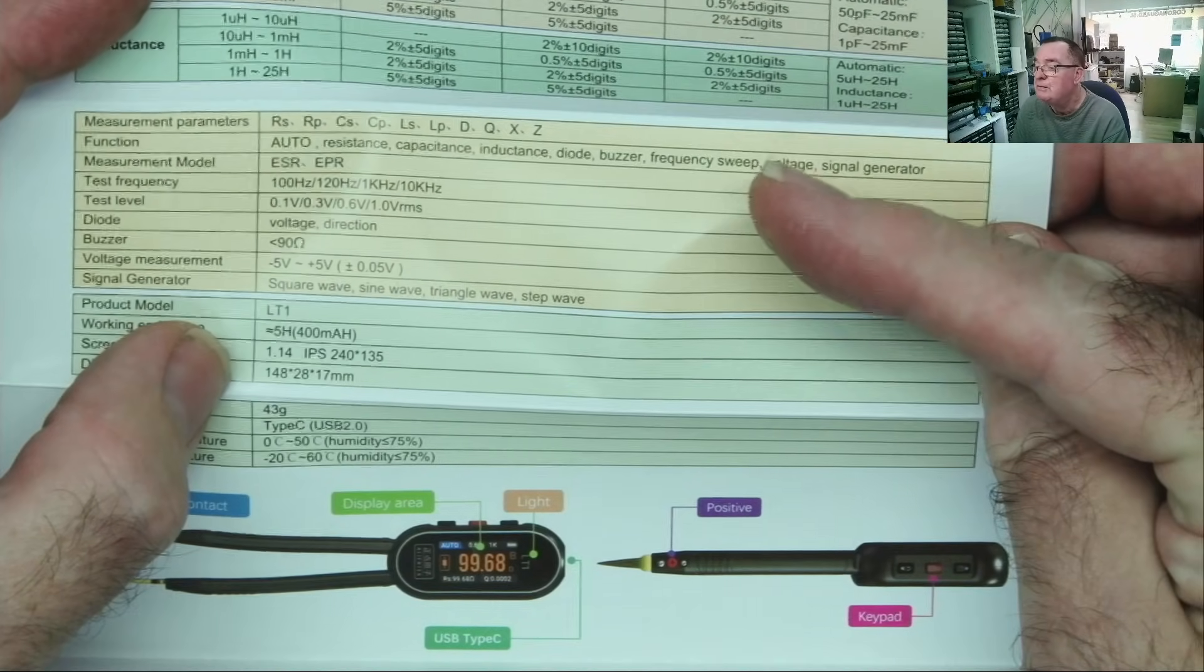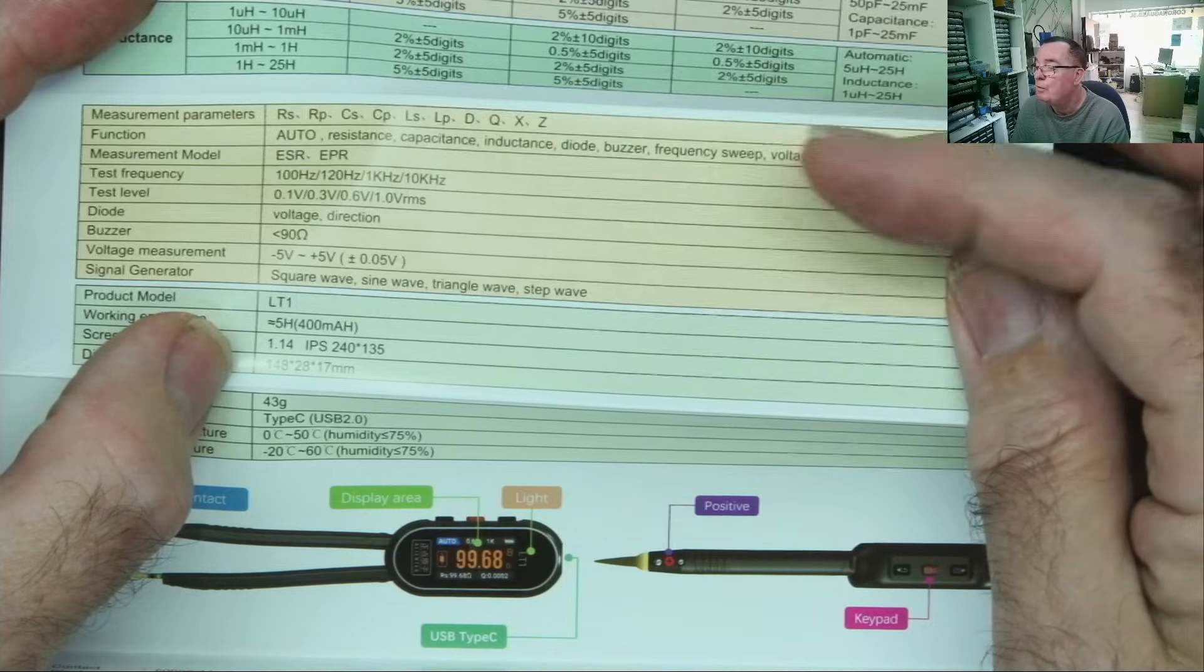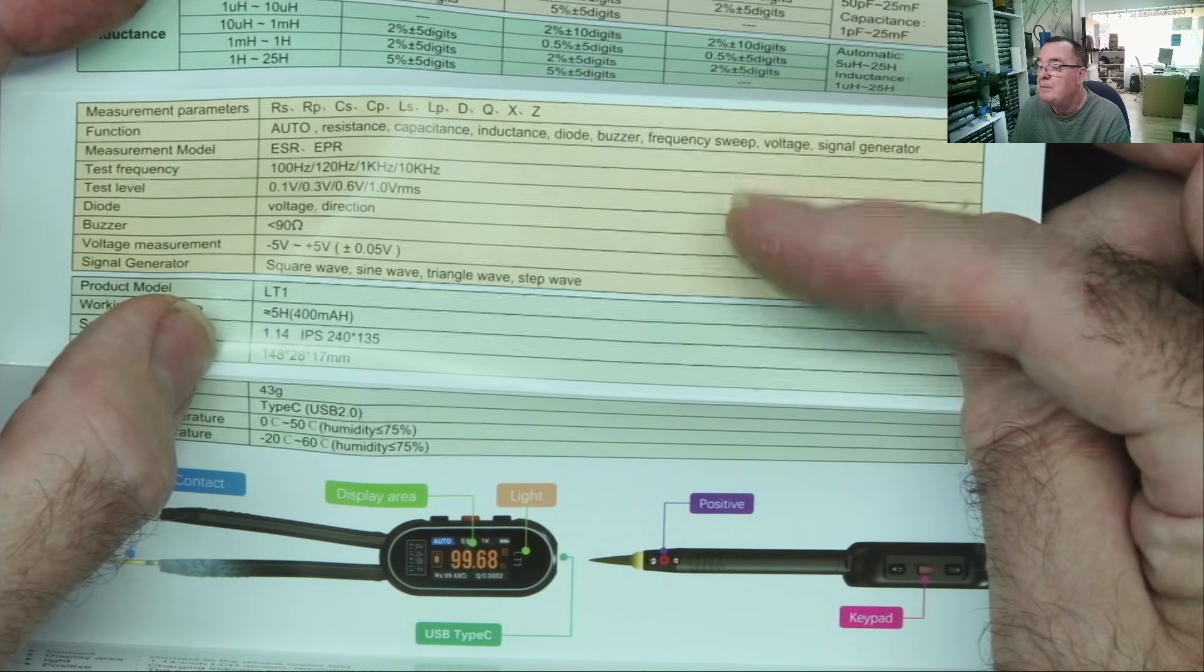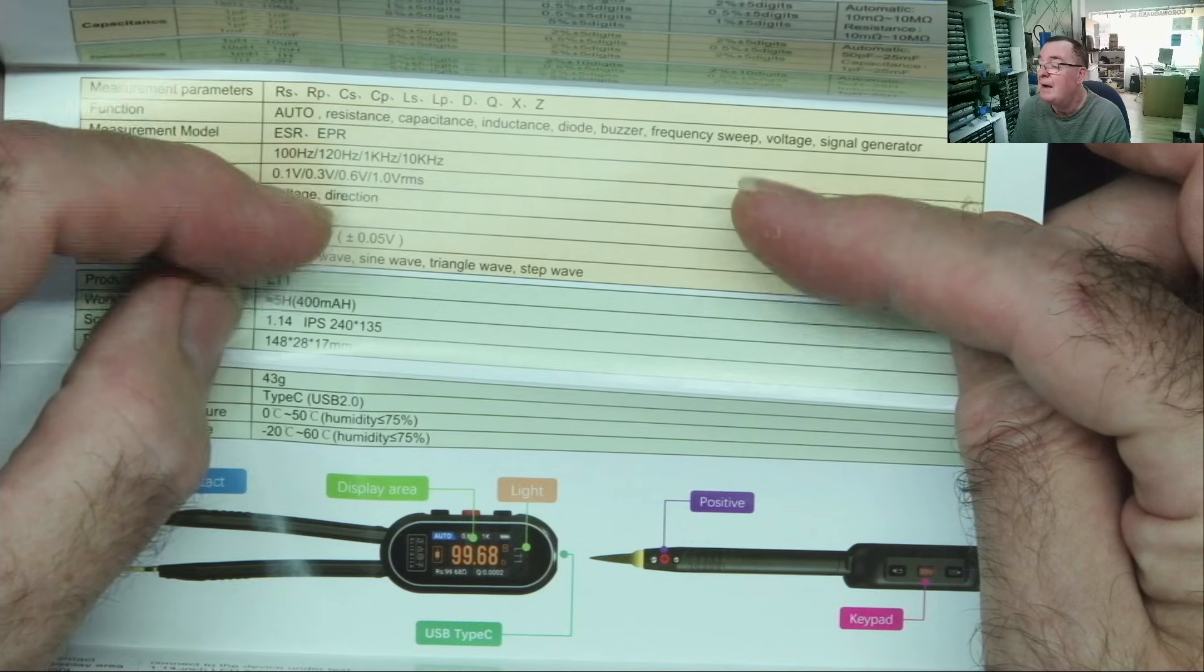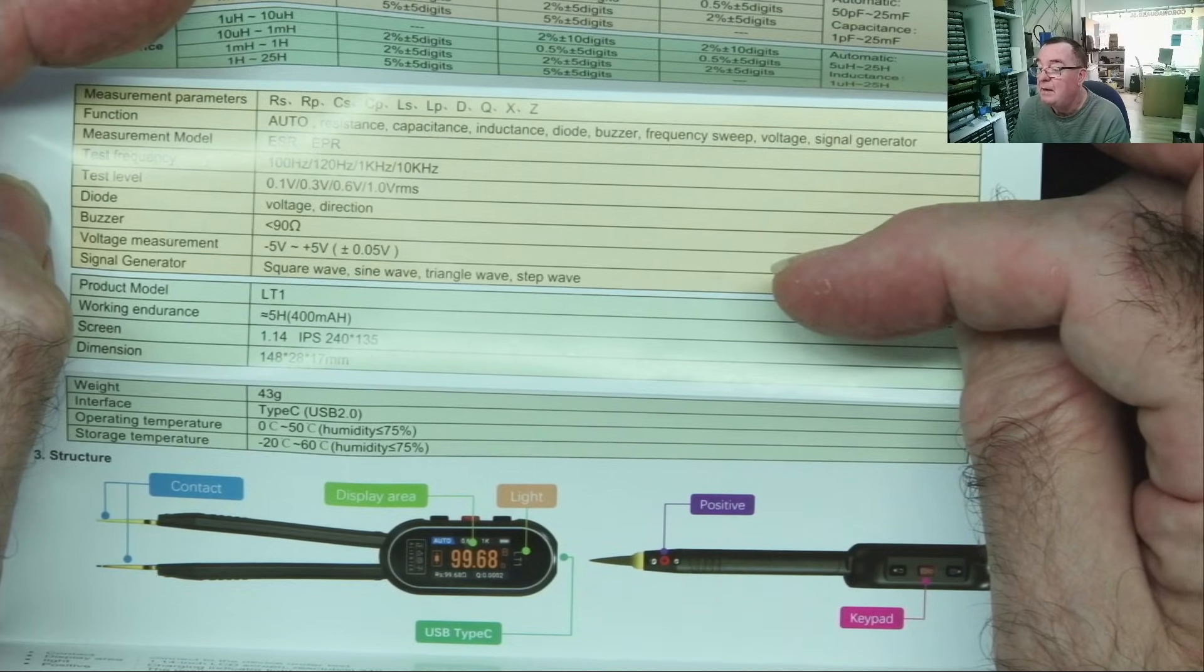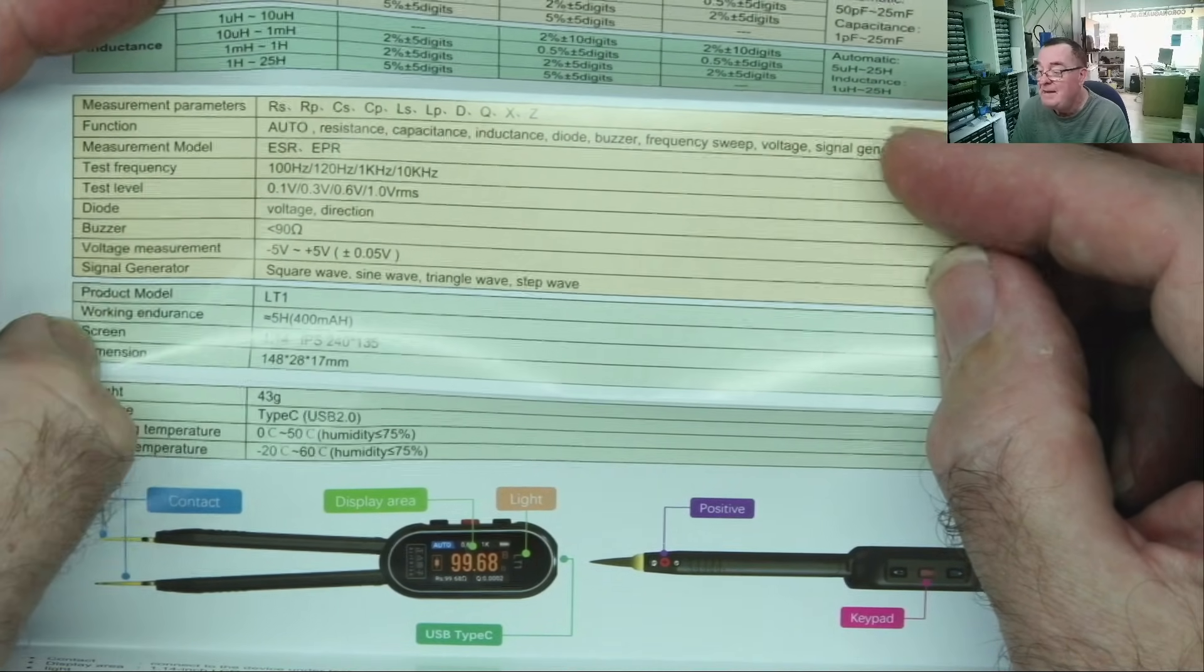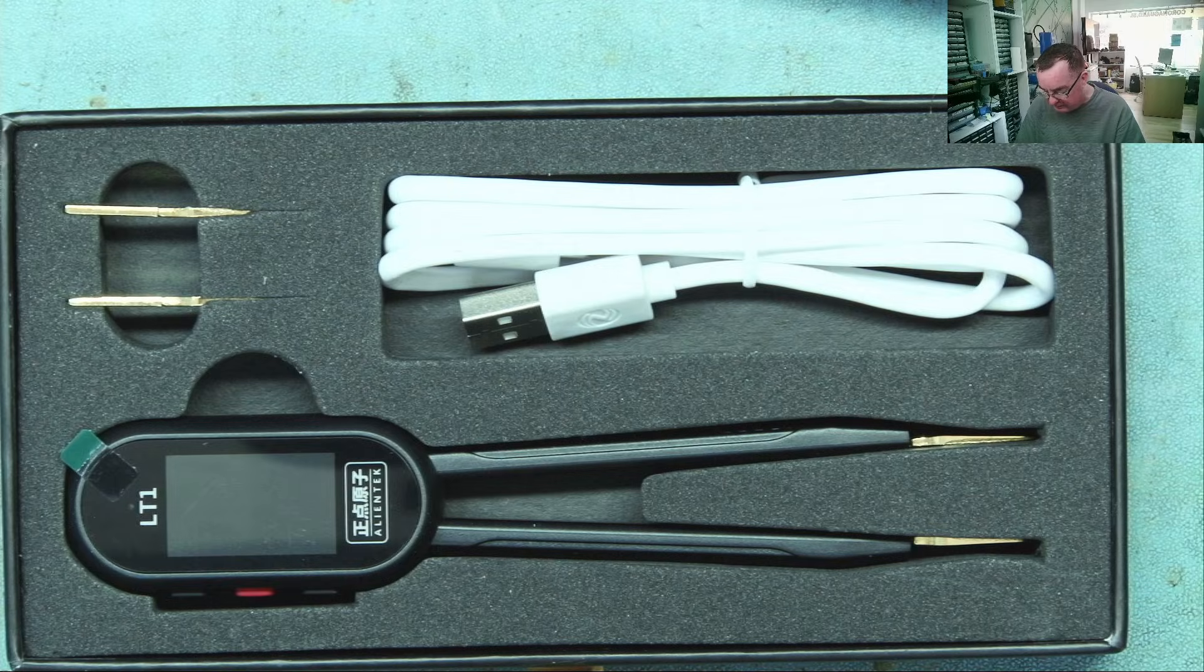Where this gets quite interesting: it has a buzzer mode for continuity, and frequency sweep. This isn't a frequency sweep like it generates a sweep to feed into an audio amplifier. This means it will go through the various test frequencies—there's four different frequencies—in turn and give you the reading at each frequency. It has a voltage mode and it's also a signal generator. That is interesting to me.